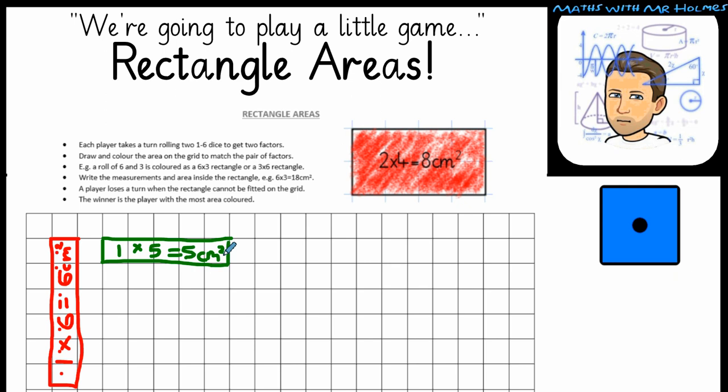Now, just before you go and play, don't worry. If you perhaps rolled a 3 and a 3, so 3 across and 3 down, you may think, oh no, I can't do that. Because, Mr. Holmes, that's a square, because all the sides are the same length.